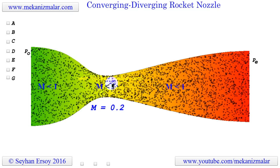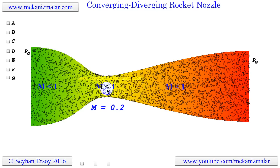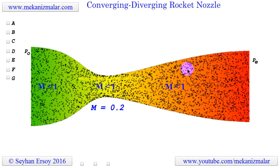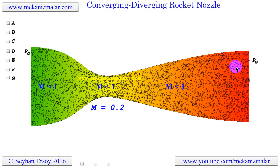The flow reaches the maximum speed at the throat. In the diverging section, the velocity gradually drops and the pressure increases accordingly.